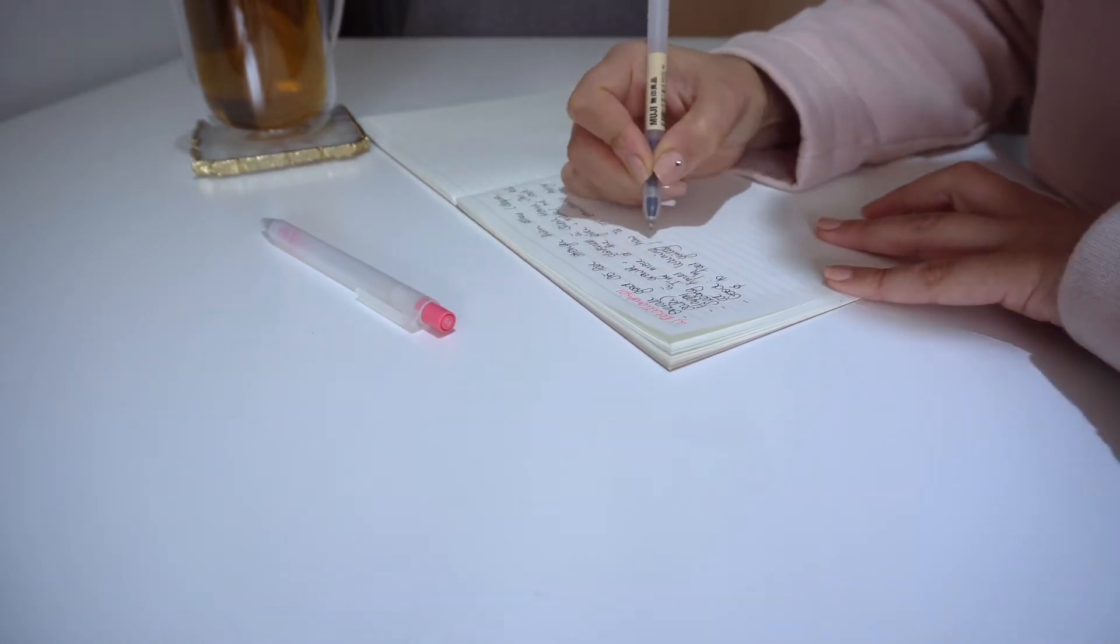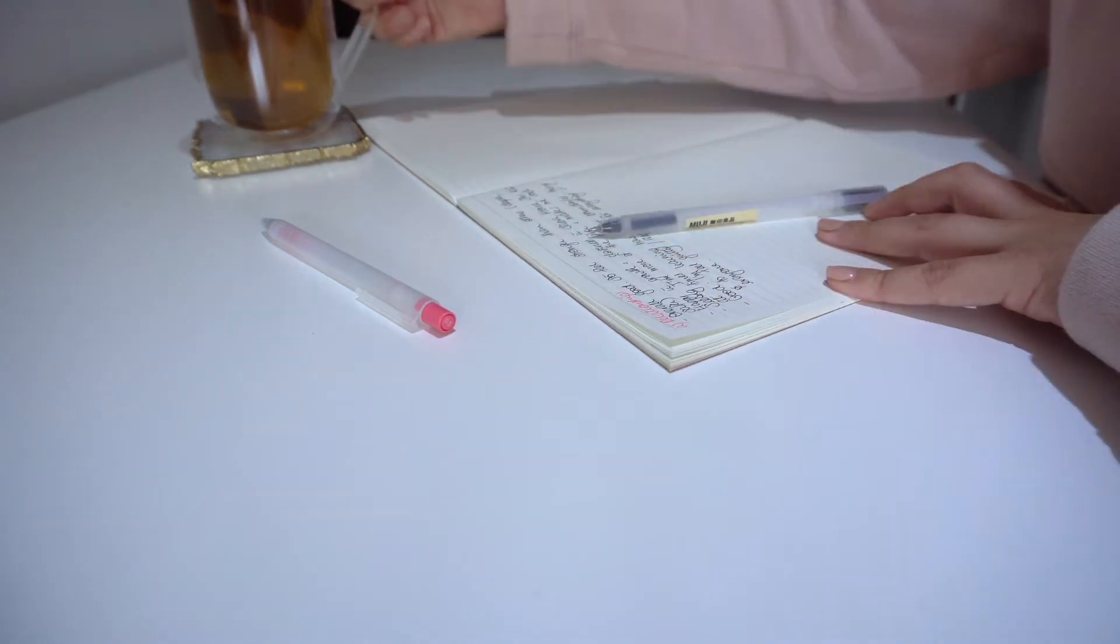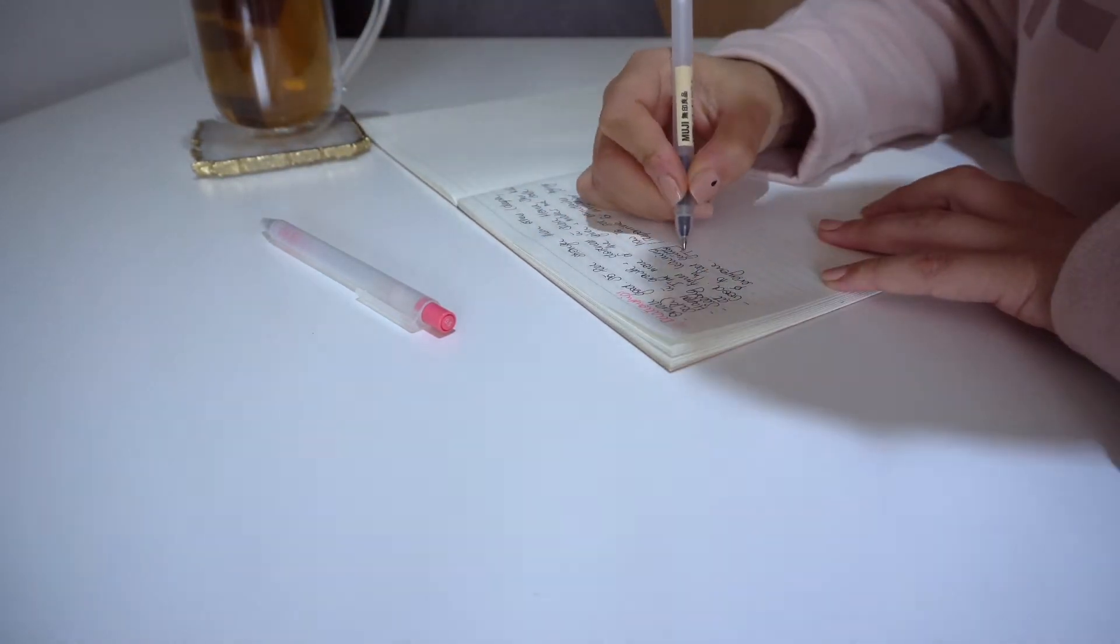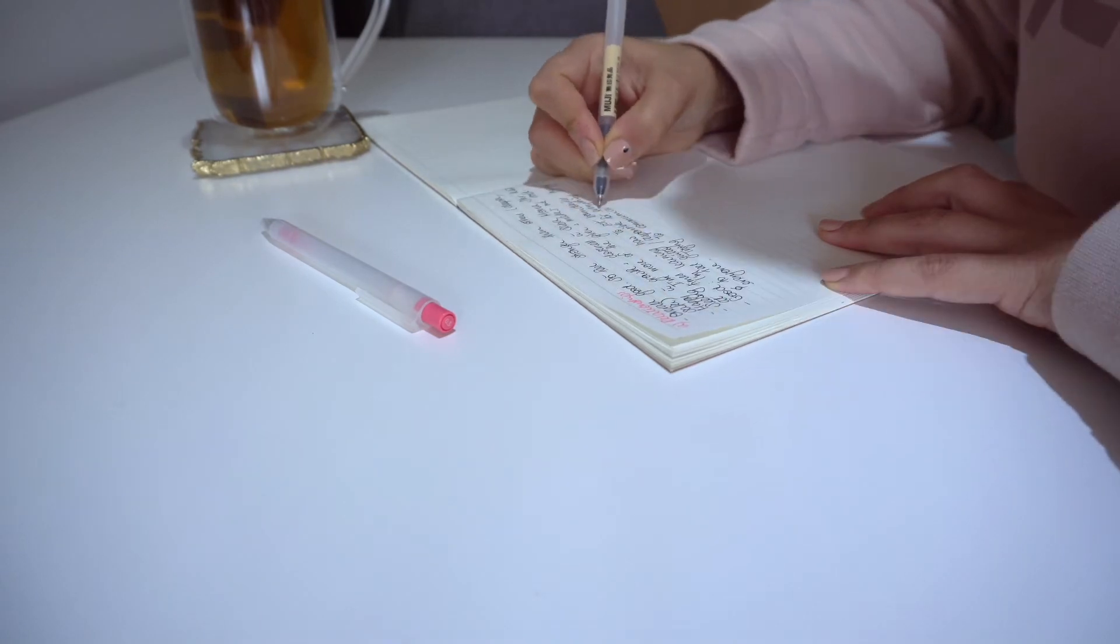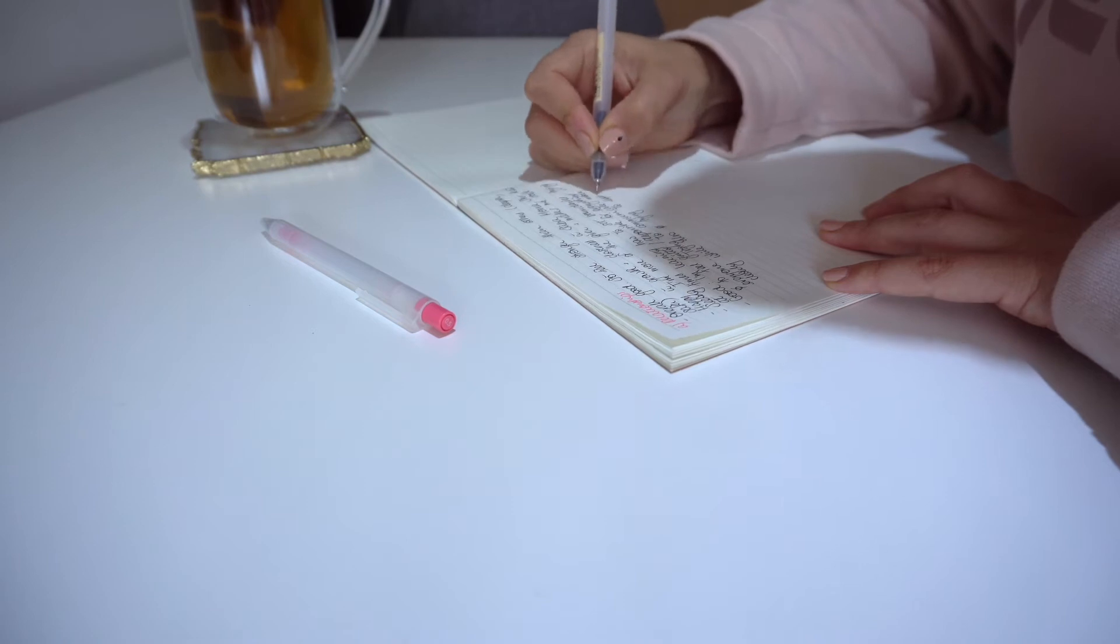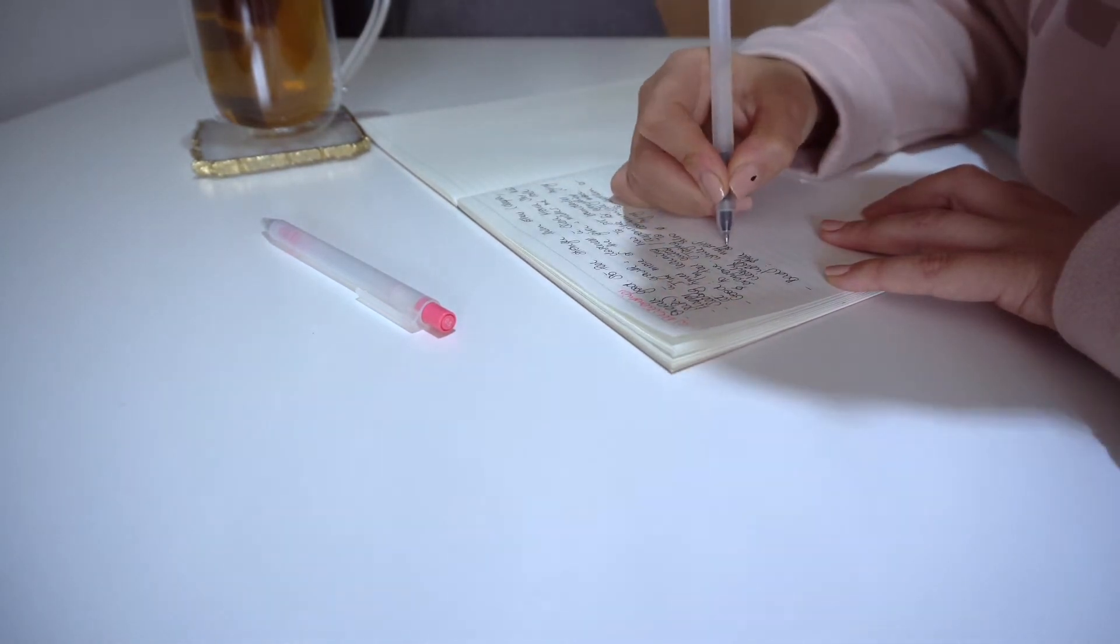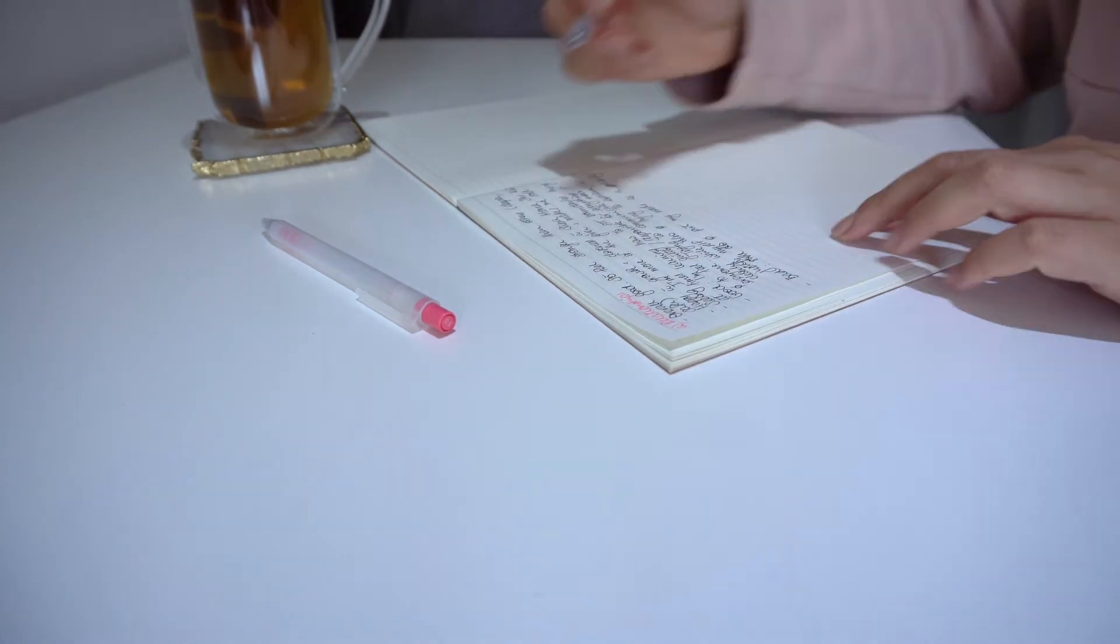Describe the memory in as much detail as possible. Describe the situation, where you were, who you were with, how you were feeling in this memory, what was going on, what you were experiencing physically and emotionally.